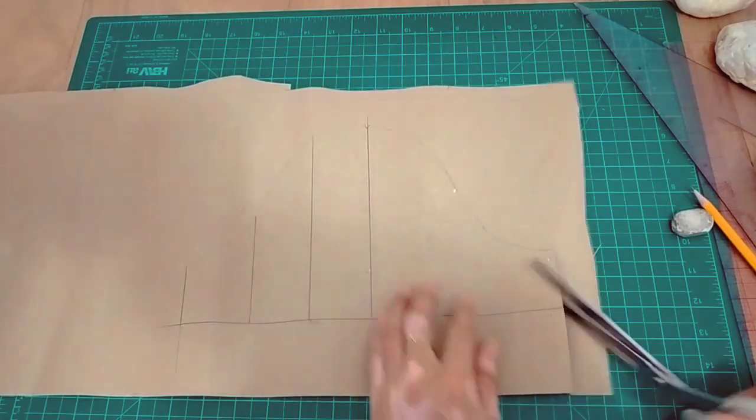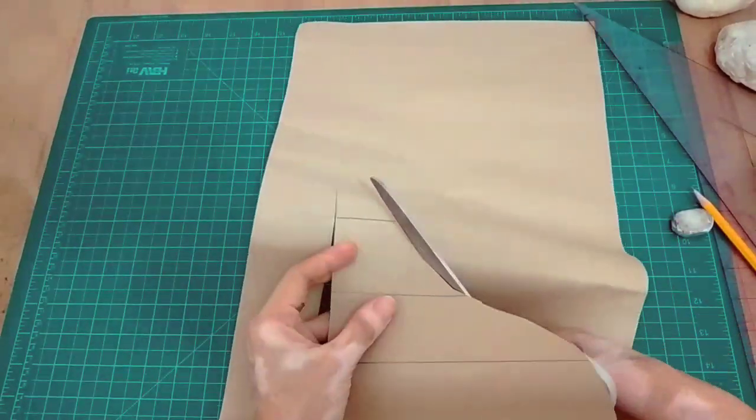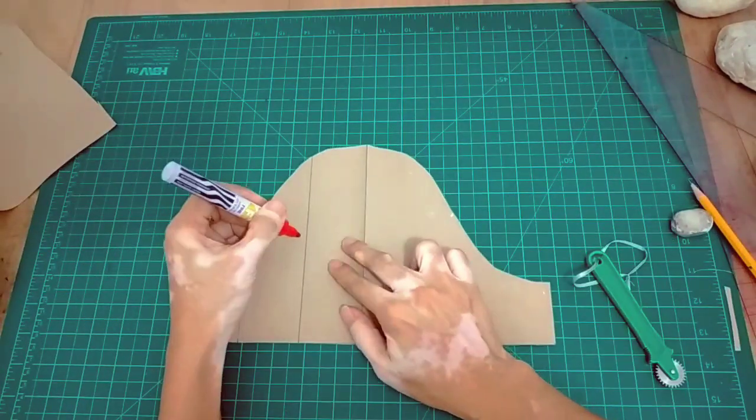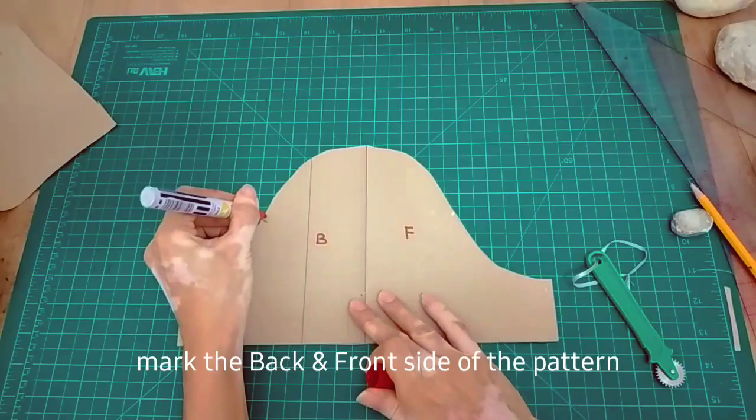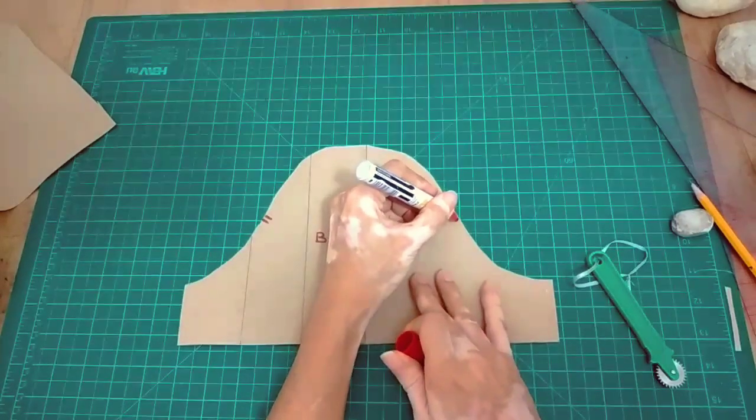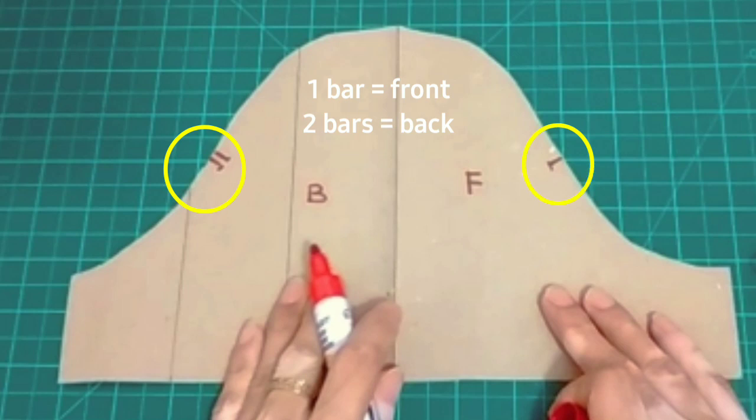So next kong gagawin is to cut out the pattern piece, and then after ko syang makat pinufold ko sya in half dun sa center. Usually kailangan muna syang imark yung back and front, yung matches na yan or yung bars na yan.